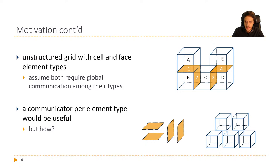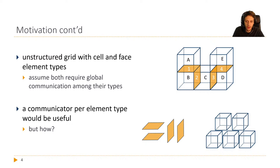Another thing is unstructured grids with different types of elements. On the right you have this figure where we have cells A, B, C, D and faces numbered one, two, three, four. Say we want to aggregate a certain property over all the cells or all the faces — a collective communication operation just for these element types — because we want to compute some error that only applies to a certain metric. We would need a communicator per element type.